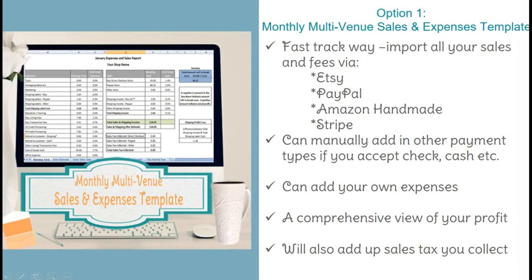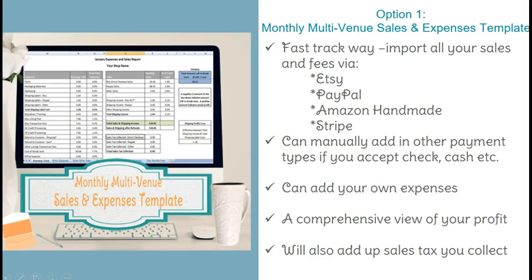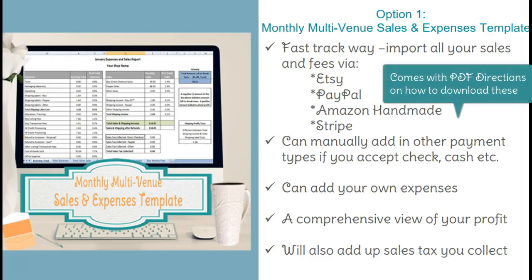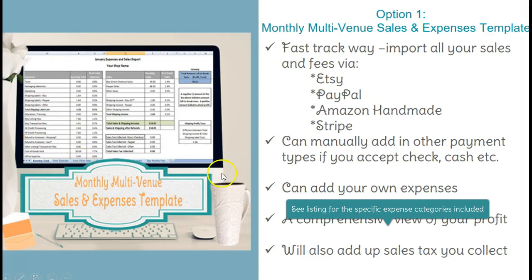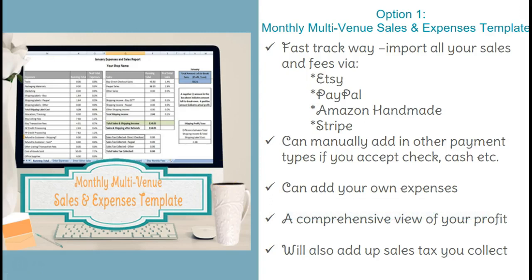Option one is the monthly sales and expenses template. This is really the fast track way to import all your sales and fees. You can import your Etsy sales, PayPal, Amazon Handmade, and Stripe sales. If you have sales that happen outside of those areas, you can manually add in other payment types. You can also add your own expenses, and there are a lot of expense categories you can list. There's an expenses tab page, so it really can be a comprehensive view of your profit — total sales minus total expenses, including all fees and overhead expenses. If you collect sales tax through any of these venues, when you paste and import the CSV, it will also add up your total sales tax collected.